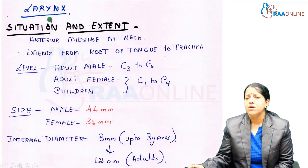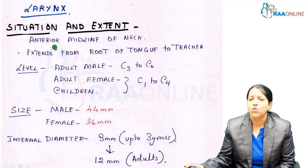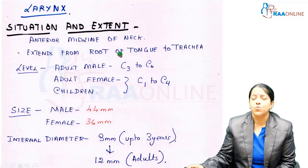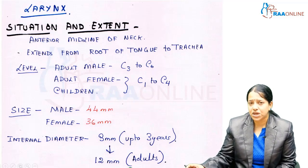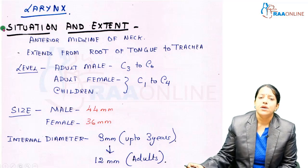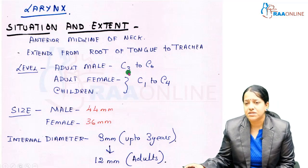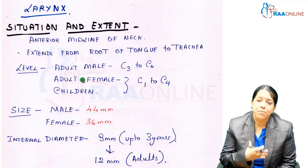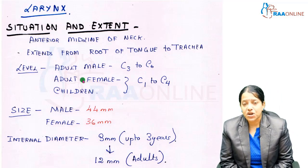The larynx, also called the voice box, is situated in the anterior midline of the neck. It extends from the root of the tongue to the trachea, continuing as the trachea beyond the cricoid cartilage. In adult males, the larynx extends from C3 to C6 vertebra. In adult females it is slightly higher, extending from C1 to C4, and in children it is similarly at C1 to C4.